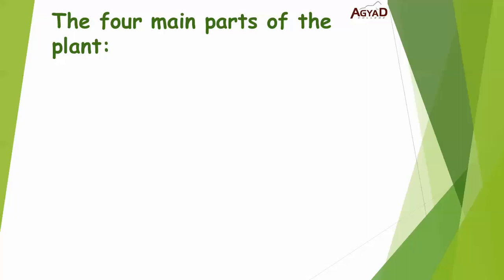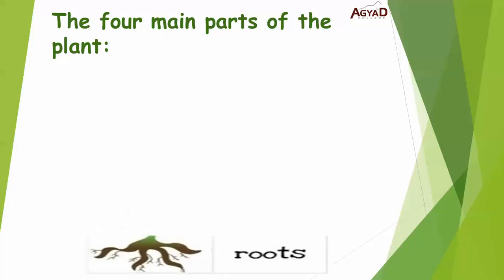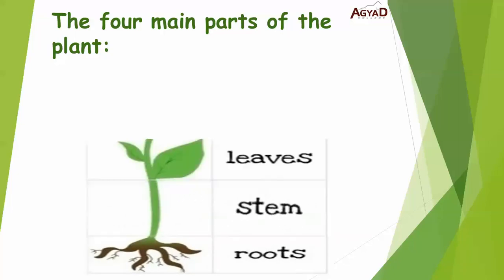If we start from down, going up, it means that we will start from the roots, going up to the stem, then the leaves and finally the flower.